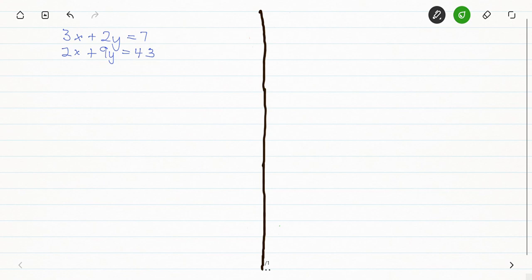We are about to use the substitution approach. The idea is to make a letter the subject in one of the equations and put it in the other equation and solve for the variable. Let's get straight into it. This is our equation 1 and this is our equation 2.